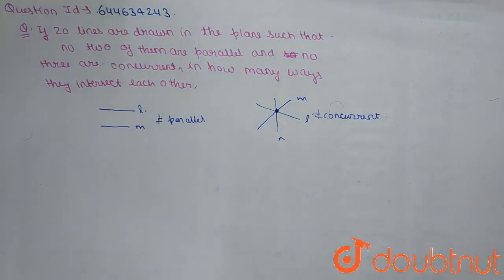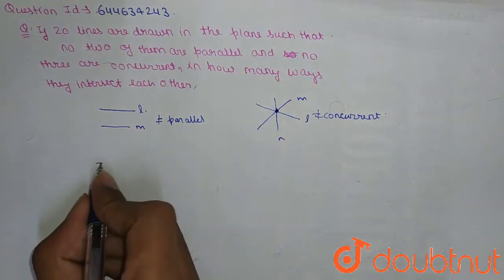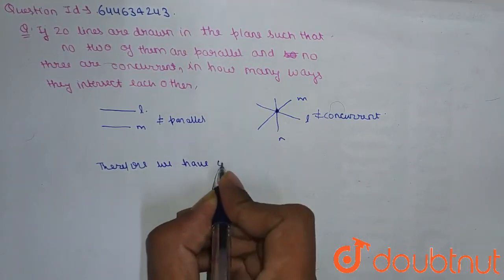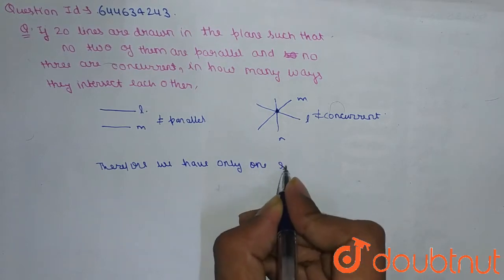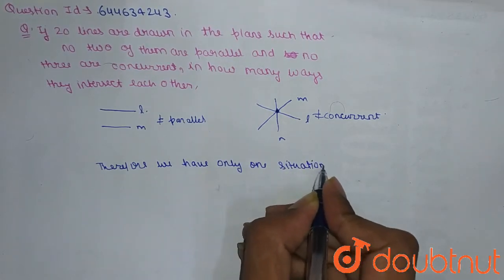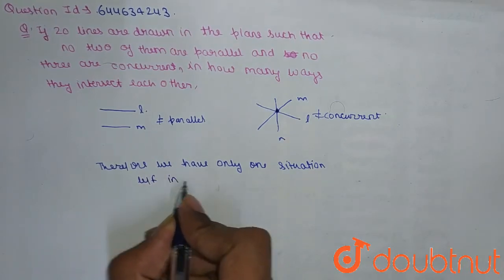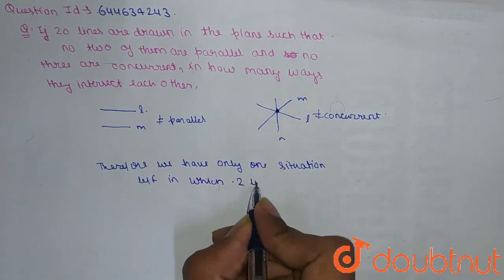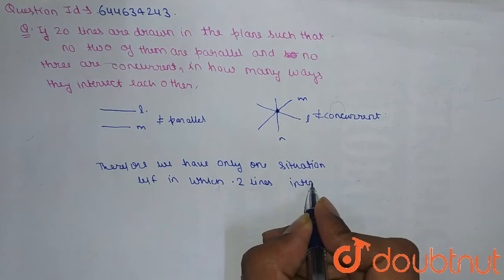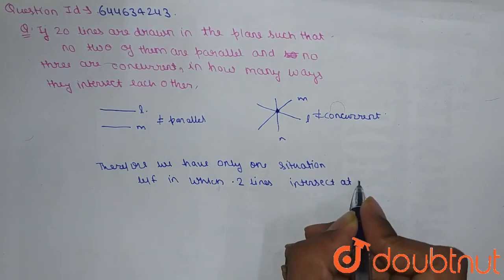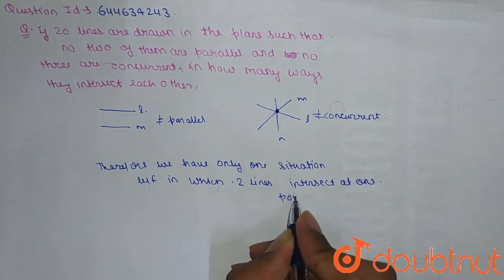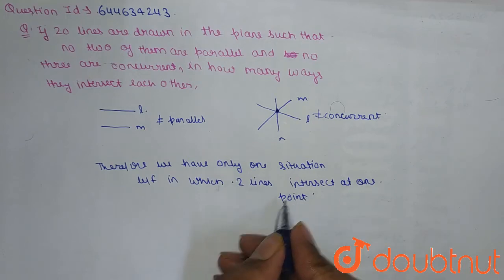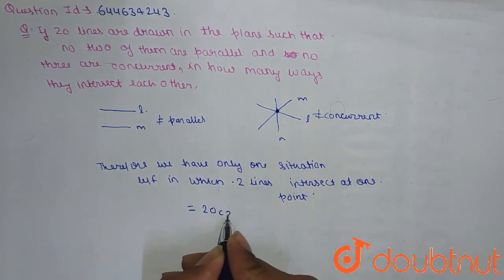Therefore, we have only one situation left in which two lines intersect at exactly one point. Since every pair of lines intersects at one unique point, the total number of intersection points for 20 lines will be equal to 20C2.